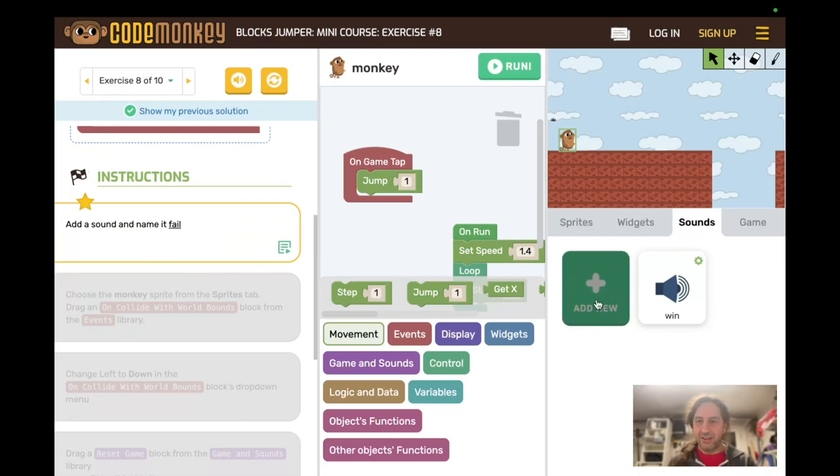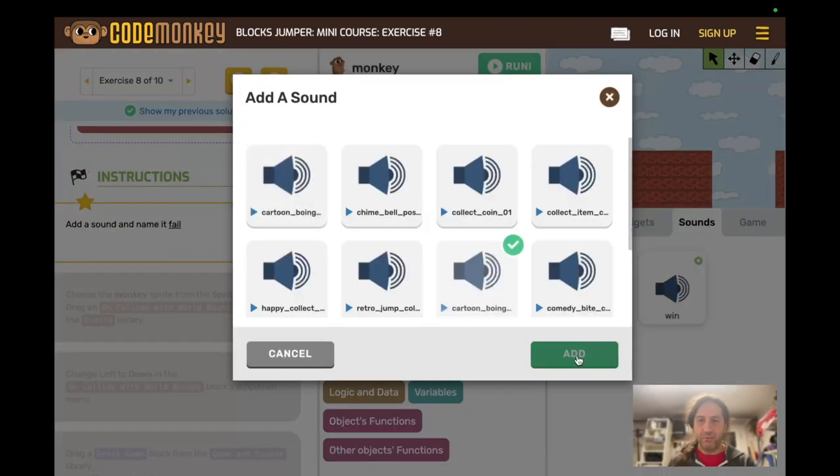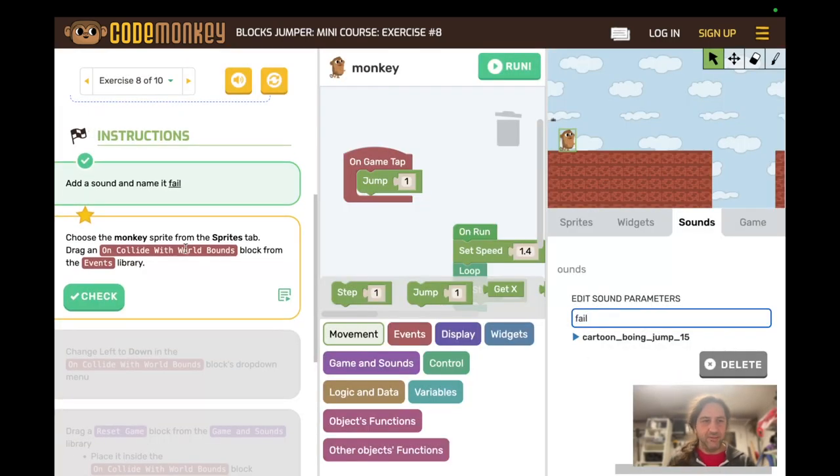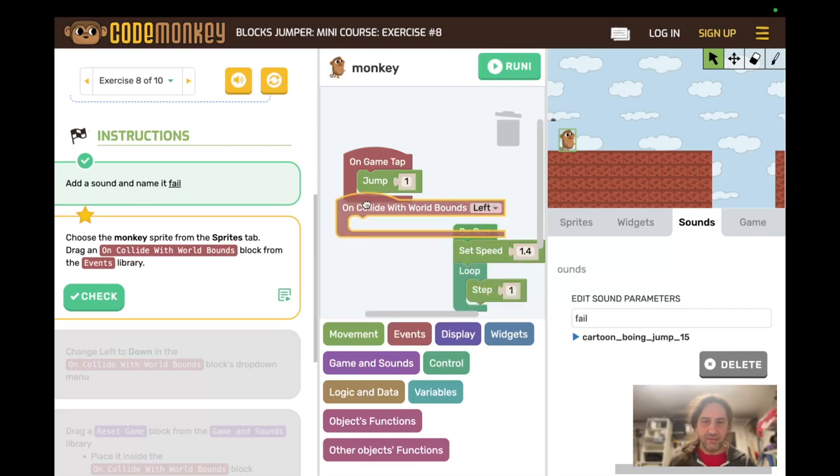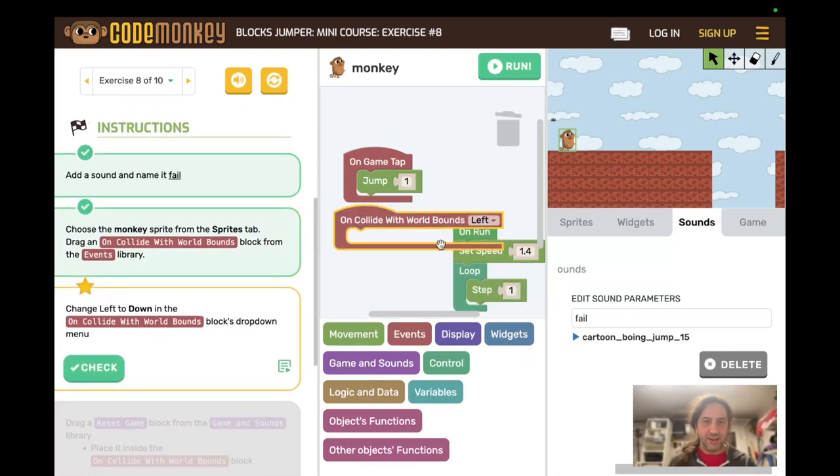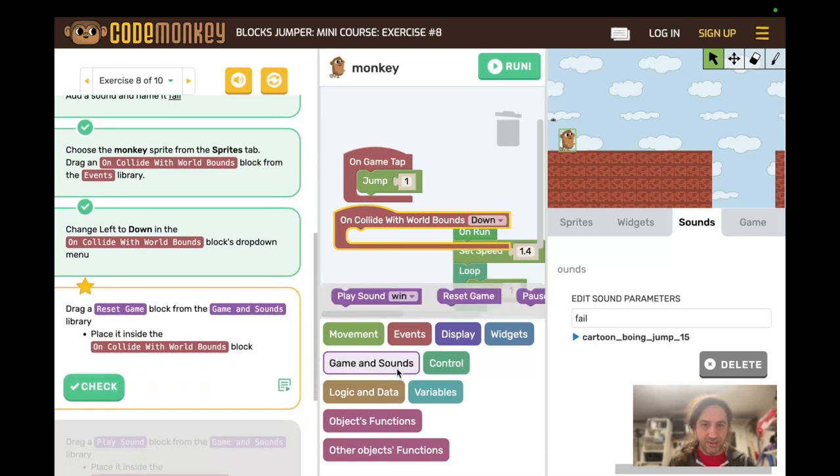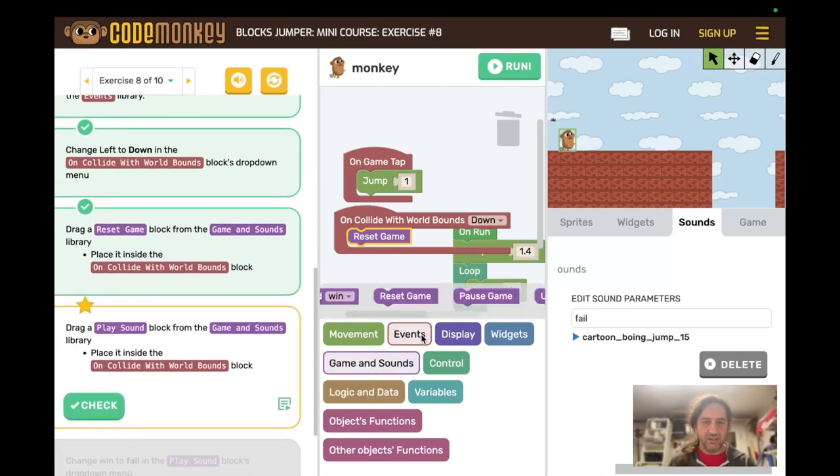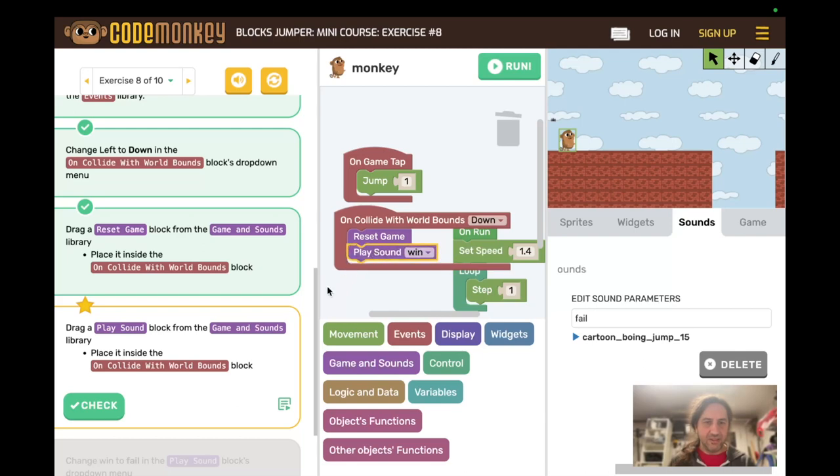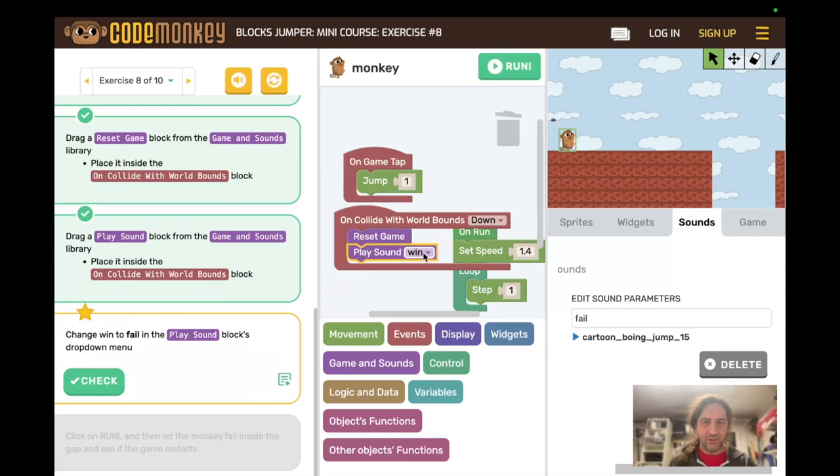Now we're going to add another sound and call it fail. I'll go with a cartoon boing. Fail. I choose the monkey sprite. We're still on the monkey sprite. On collide with world bounds from the events library. And change left to down. And then from the game and sounds library, we want a reset game inside the on collide with world bounds. And a play sound from game and sounds. And we want to play sound. Check. And we want to change win to fail.